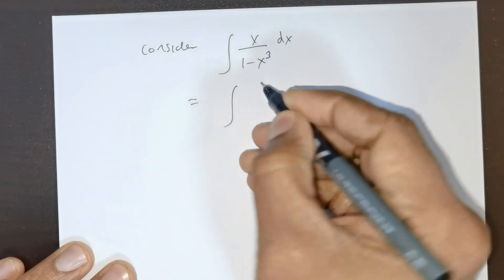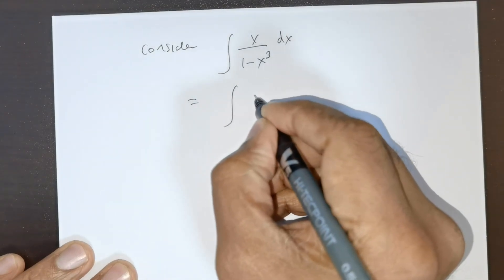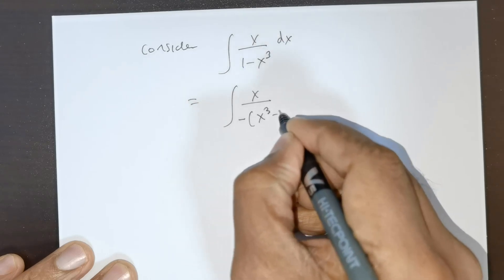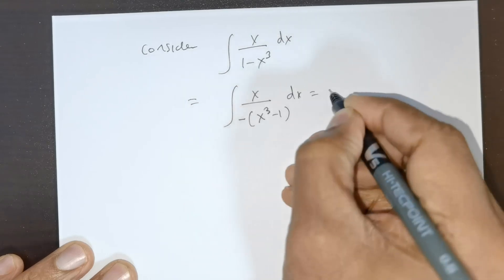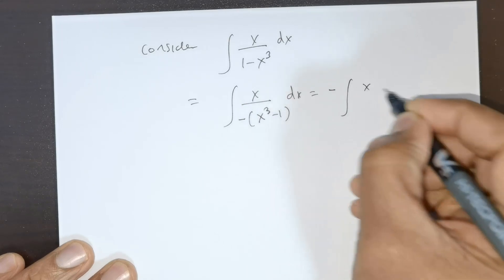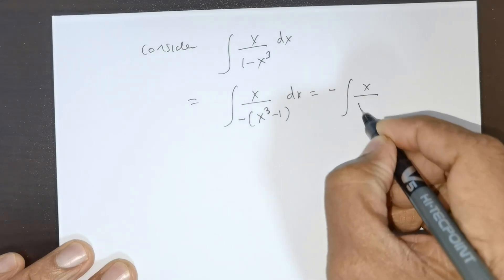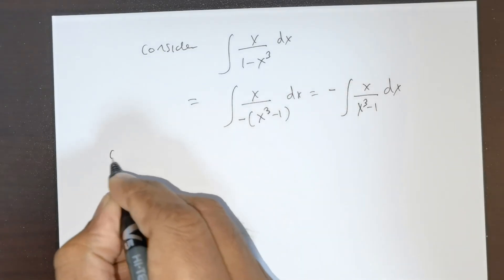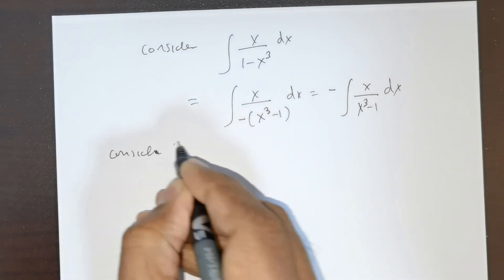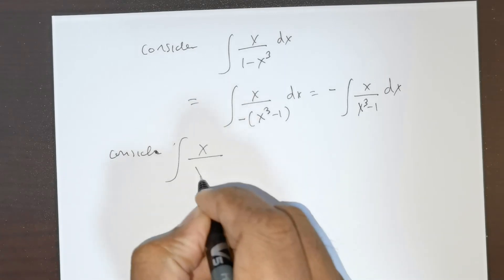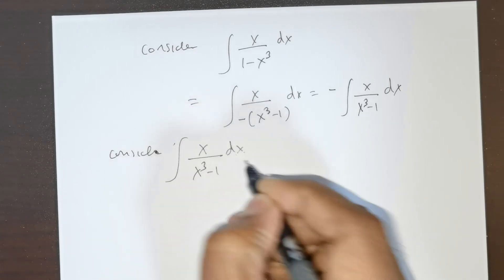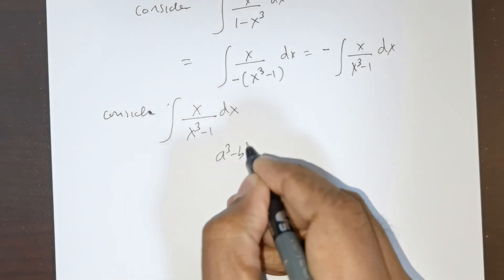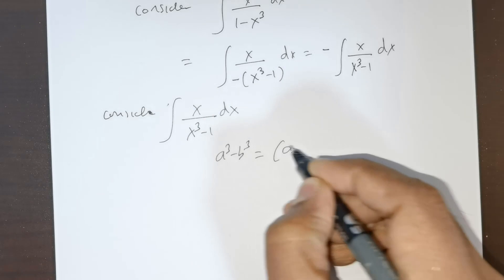By linearity, I can rewrite this as x over negative of x cubed minus 1 times dx, which is again rewritten as negative x over x cubed minus 1 times dx. Now let me exclusively consider the integral of x over x cubed minus 1 times dx. There is a formula: a cubed minus b cubed...